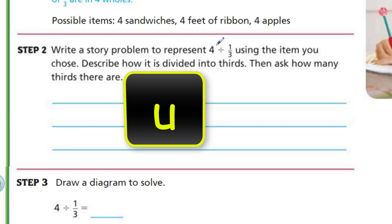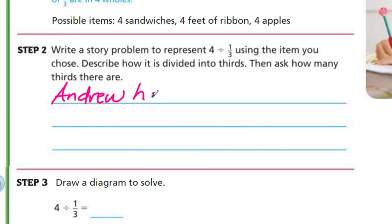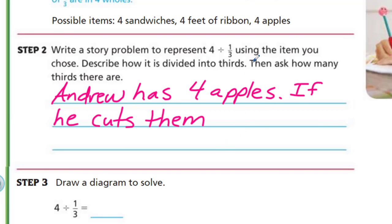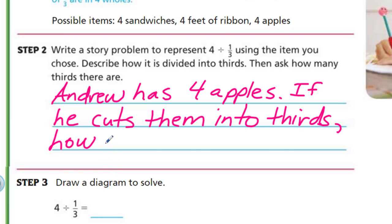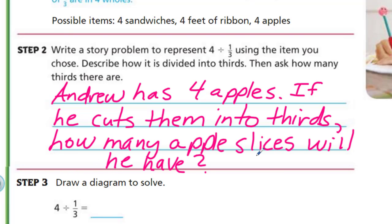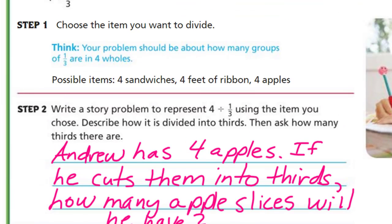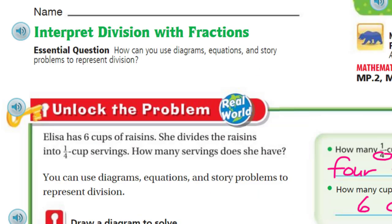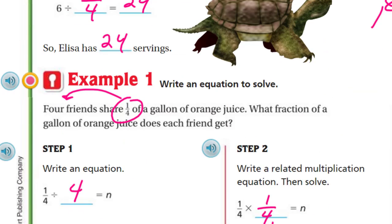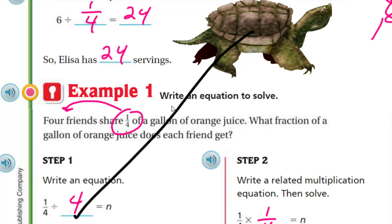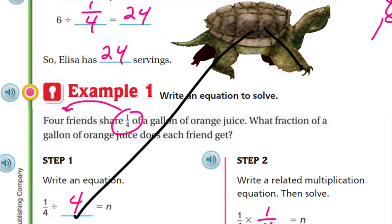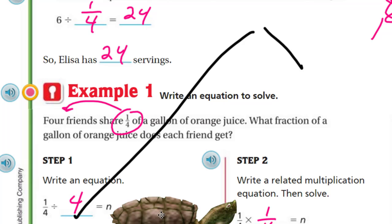Let me choose a name. Who should I put in this problem? How about Andrew? Yeah, I like the name Andrew. He has four apples. I will say that if he cuts them into thirds, how many apple slices will he have? Cool, yeah I like that bright pink. Very nice. Hey, Turtle — where'd Turtle go? Come back, Turtle. Where are you? You're supposed to follow me onto the next page. Oh no, I didn't mean to do that really. Sure you did.